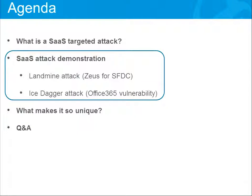Let's delve into two attacks — this is just an illustration of two attacks we found; there are more. It's really unlimited. If you look at the SaaS organization, it's an unprotected organization. It's very easy to penetrate it. I'll just show you two examples of how easy it is.